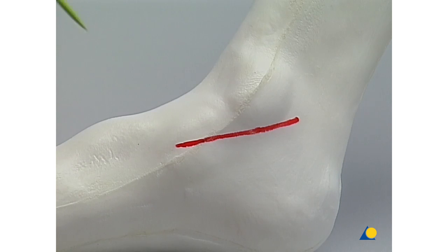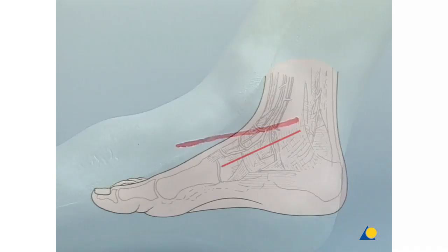The anteromedial approach begins over the tubercle of the navicular and ends behind and below the medial malleolus, as illustrated with this graphic.